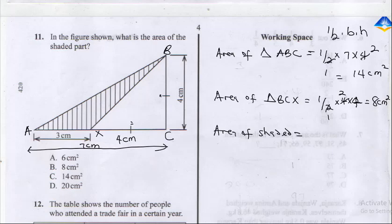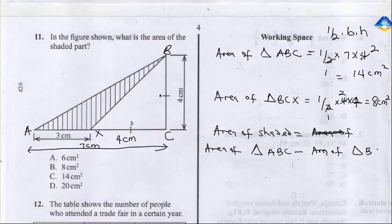To get the area of the shaded part: area of shaded part equals area of the bigger triangle ABC minus the area of the smaller triangle BCX. That's 14 minus 8, which gives us 6 cm squared. The correct answer is A.